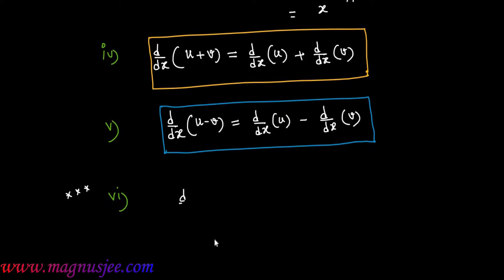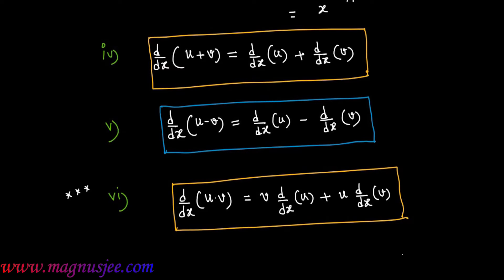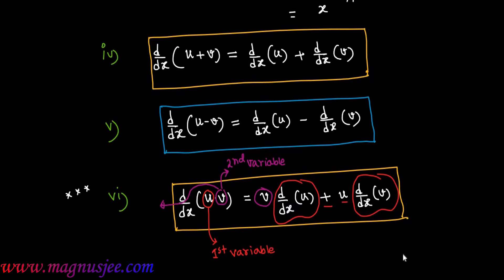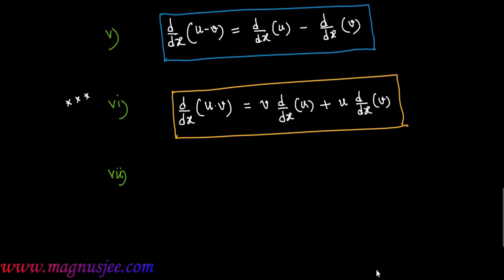Formula number 6: d/dx of u·v — the product rule — equals v·(d/dx of u) plus u·(d/dx of v). Here u is the first variable and v is the second. We bring the second variable v outside the d/dx operator first to get v·d/dx(u), then u comes outside to give u·d/dx(v). That is the formula for differentiation of the product of two variables.